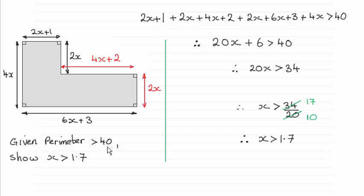So knowing that the perimeter then is greater than 40, all I've done is sum up the sides, say it's greater than 40, and then just clean this up. OK? It turns out that X is greater than 1.7.